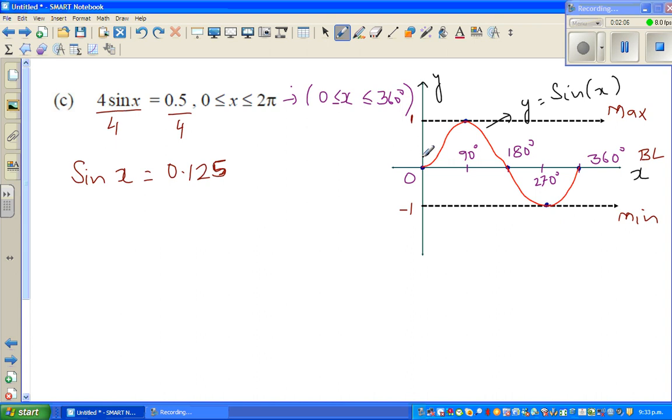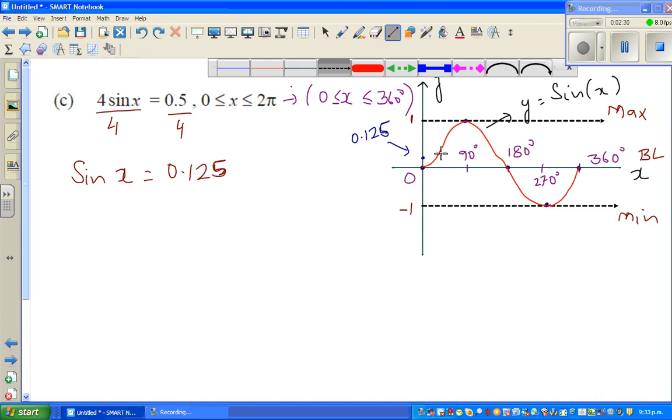The question is when is sine x becoming 0.125. Making a rough estimate, 0.125 probably comes here. For which value of x is sine x becoming 0.125? In other words, when y is 0.125, what's the value of x? This is one angle, one answer, and this is the other answer. You've got two answers here.